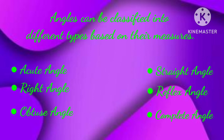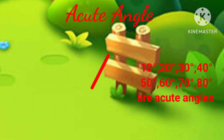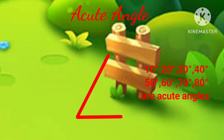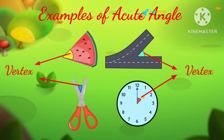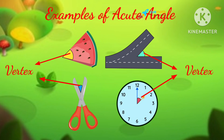Now let's study each angle with real life applications. An angle which measures greater than 0 degrees and less than 90 degrees is known as an acute angle. Here are a few examples of acute angles.